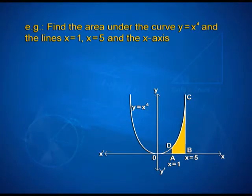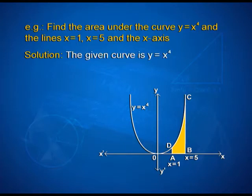Now, let us look into an interesting example. Find the area under the curve y = x⁴ and the lines x = 1, x = 5, and the x-axis. The given curve is y = x⁴ with the x-axis and y-axis, and the ordinates x = 1 and x = 5.